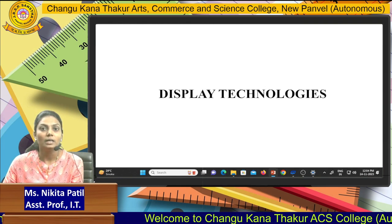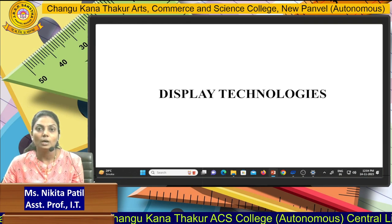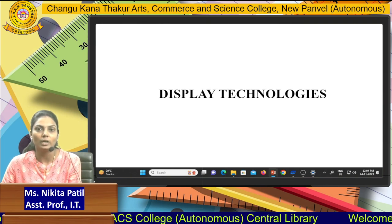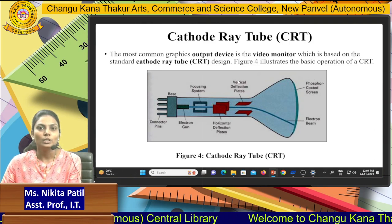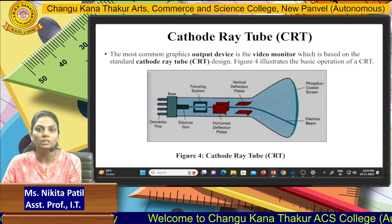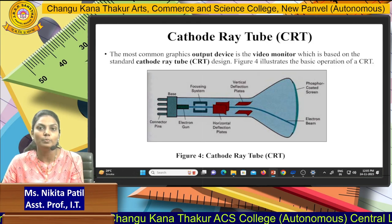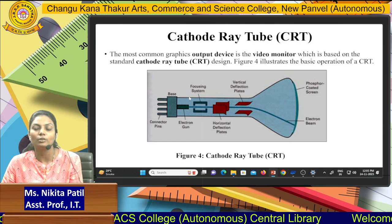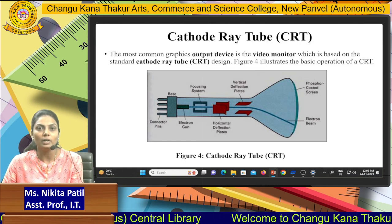The next topic is display technologies. In output terms, the display technologies used in computer graphics are discussed. The first display technology is the Cathode Ray Tube, or CRT. The CRT is a cylindrical-shaped device whose main component is a phosphor screen, which emits electron beams that are focused onto the screen to display images.